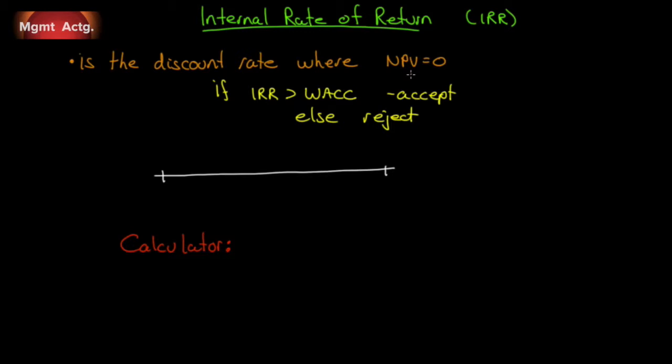Recall that when net present value equaled zero, it means that the project returned exactly the required rate of return. So what we're solving for here is not net present value, but solving for the discount rate that would make net present value equal zero. And we compare that to our weighted average cost of capital. If the rate we get is higher, we accept, else we reject.